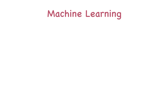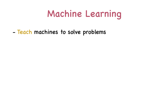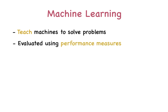Machine learning involves teaching systems to teach themselves to solve problems. In order to evaluate how well a computer teaches itself, we use performance measures. Depending on the type of problem, an appropriate measure is used.